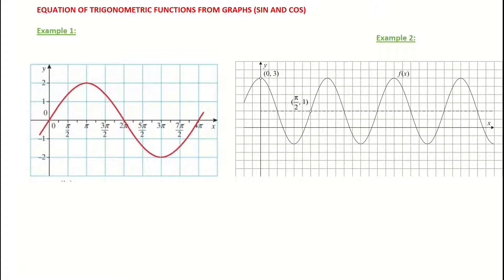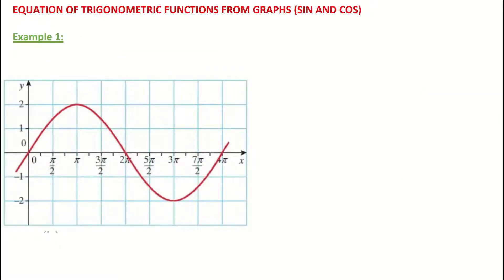Looking at example one, we know that this is a sine function because it's going through the origin — a sine function will always go through the origin. Just to write down the general case for our sine function, it's going to be written in the form n times sine bx.